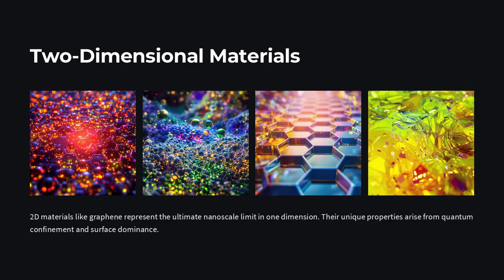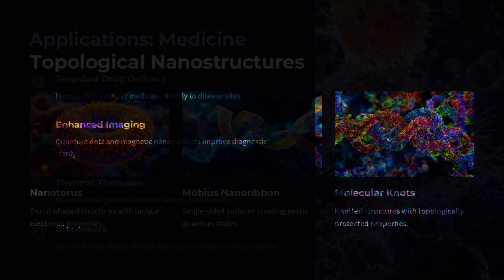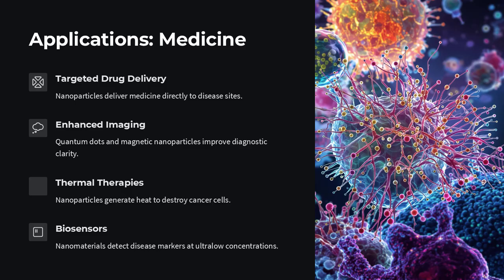A single gold nanorod may exhibit different catalytic activity at its ends versus its sides. Platinum clusters of identical size can show wildly divergent hydrogen adsorption energy depending on precise atomic arrangement.